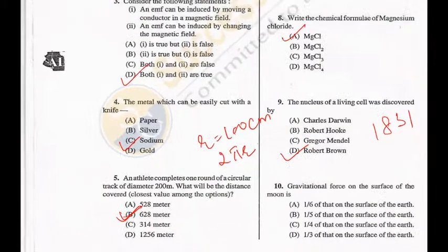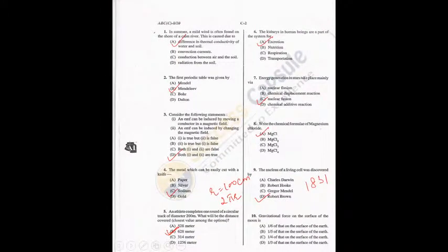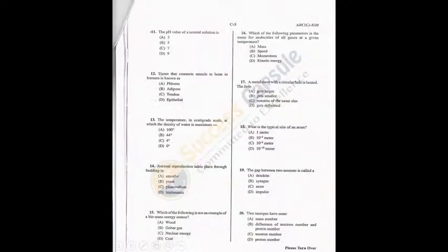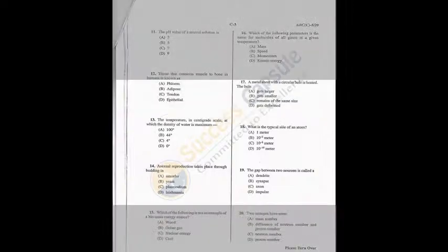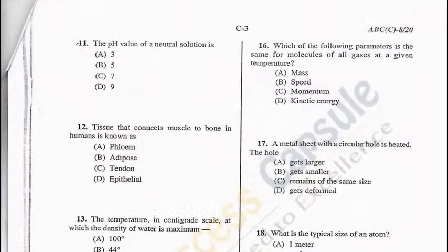Question 10: Gravitational force on the surface of the moon is one-sixth of the force on Earth — A is the correct answer. Question 11: The pH value of a neutral solution is 7. Solutions with pH lower than 7 are acidic and greater than 7 are basic — C is correct. Question 12: Tissue that connects muscle to bone in humans is known as tendon — C is the correct answer.